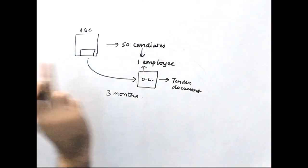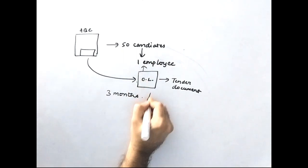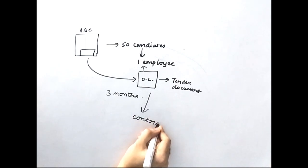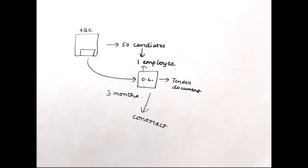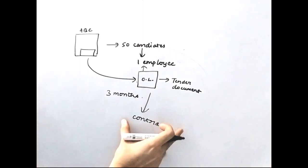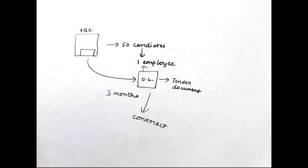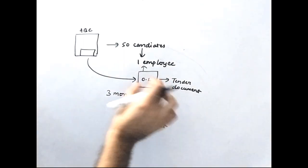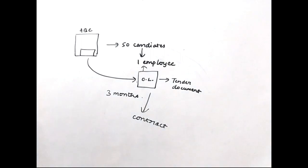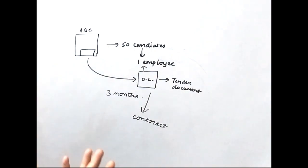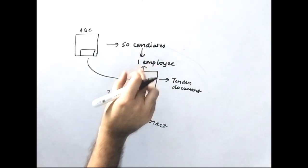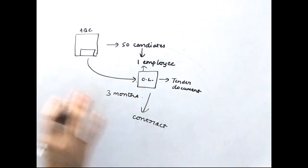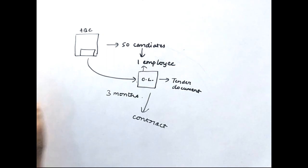Out of all 50 candidates, this one employee has been selected and he has got this offer letter which he has not yet signed. So this is the tender document — it contains all the terms and conditions of his stay in the company. As soon as the employee signs this offer letter, it becomes a contract. In construction, the contract will be a legally binding document, meaning if terms are not followed, it can go to court.